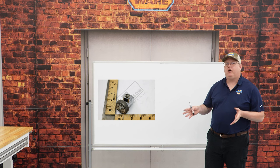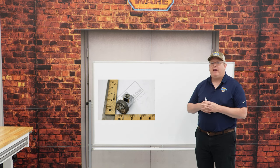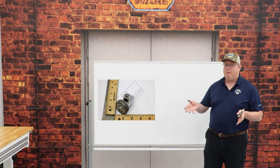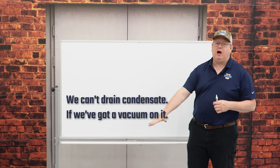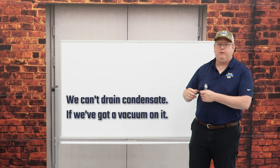On this week's boiler tip, we're going to talk about vacuum breakers. Vacuum breakers have a really important job because when we shut a piece of equipment down, a heat exchanger or a boiler, we don't want a vacuum to form on that exchanger. One reason is on a process heat exchanger, we can't drain condensate if we've got a vacuum on it.